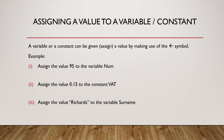A variable or constant can be assigned a value by making use of the arrow symbol. For example, to assign the value 95 to the variable num, this is done as follows: num, arrow symbol, 95.